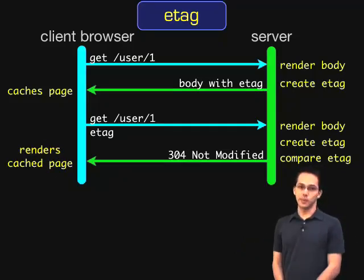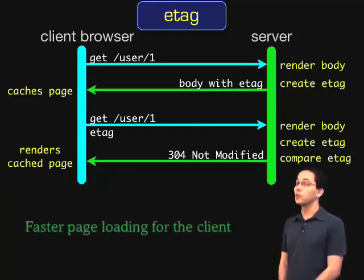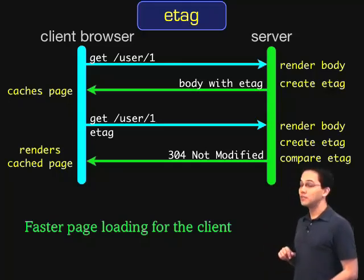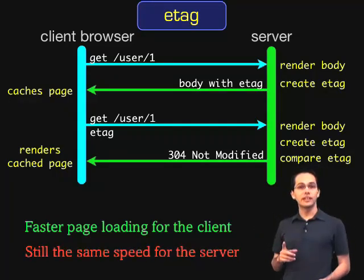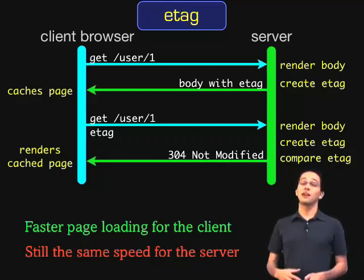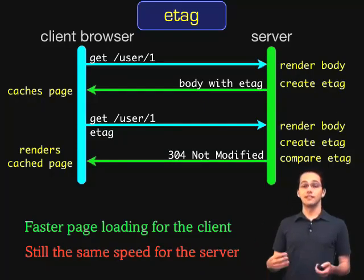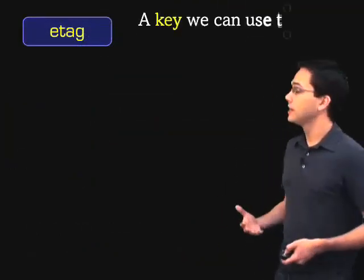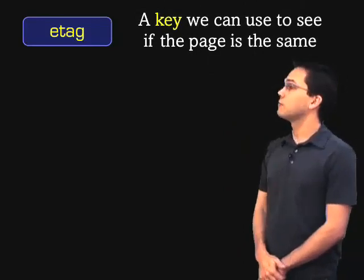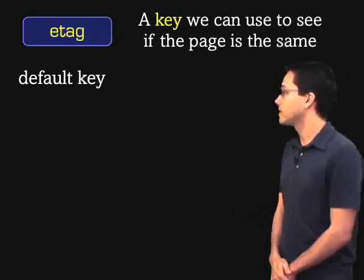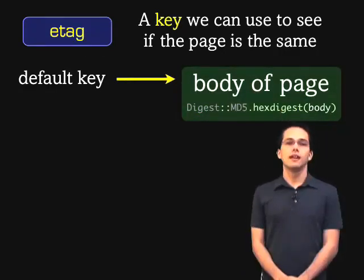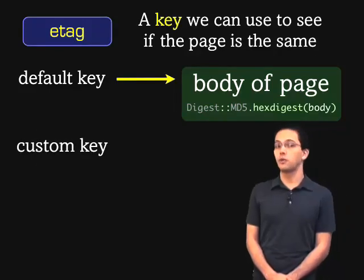The benefit of using e-tags in this way is faster page loading for the client because it loads everything out of its local cache. However, as you might have noticed, it's still the same speed for the server because every time the server has to render out the complete page to calculate the e-tag to see if it matches. If we had to define what an e-tag is in simple terms, it might be a key that we use to see if the page is the same. By default in Rails, we basically take the entire body of the page to calculate that e-tag. However, in Rails 2.2, we've been given the ability to create a custom e-tag for our Rails apps.